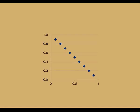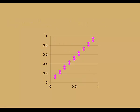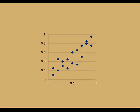Let's recap. Here, the markers line up perfectly and there's a downward trend left to right — smaller values of the explanatory variable are associated with larger values of the response. Here, the direction is positive with an upward trend left to right, but the markers don't line up all that well. This is an example of a strong positive linear association.